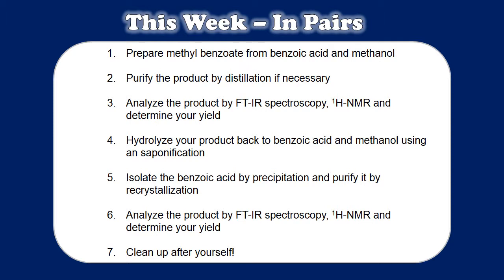This week in pairs you'll be preparing methyl benzoate from benzoic acid and methanol. You'll then analyze that product by IR and NMR spectroscopy to determine purity and identity, and you'll get a yield. You'll then immediately hydrolyze your product back to benzoic acid and methanol using a saponification reaction, isolating and analyzing it again by IR and NMR spectroscopy to determine purity and identity. You'll weigh it to determine the yield of that reaction as well, clean up the lab, and then write a paper explaining how and why you were able to create methyl benzoate from benzoic acid and then benzoic acid from methyl benzoate by carefully constructing and choosing your reagents.